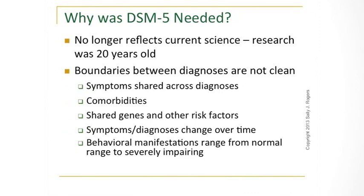However, we now know that is definitely not true. There's fuzziness of the boundaries in both behavior and biology. There are a lot of symptoms shared across diagnoses — attention problems, affective instability, language delay — occurring across many different conditions. Conditions co-occur and are comorbid, so people in clinic often need multiple diagnoses. At the biological level, some of the same genes contribute to different diagnoses, showing overlap even at the level of etiology.